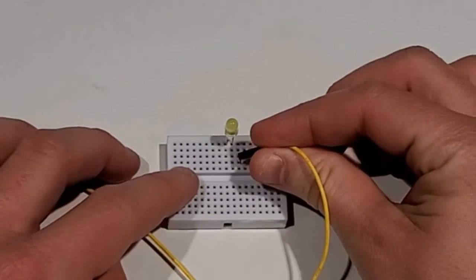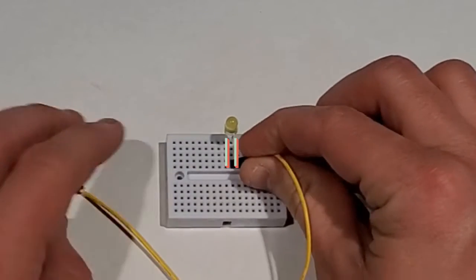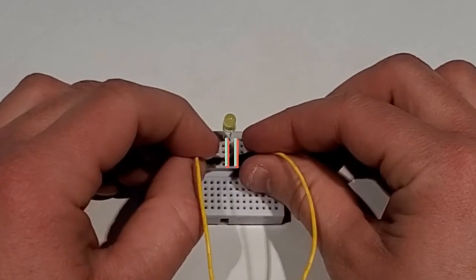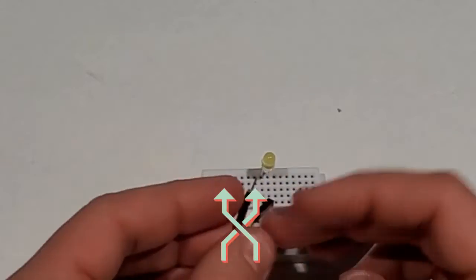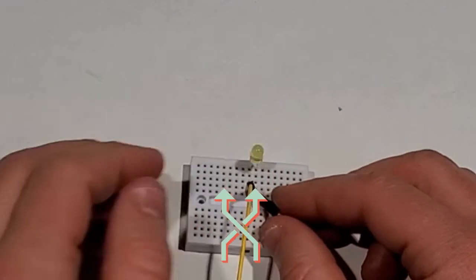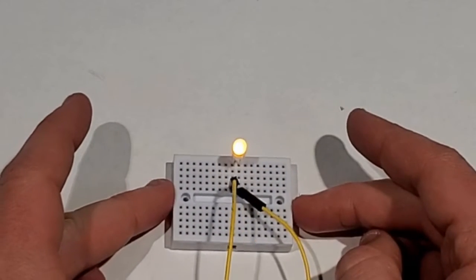You're going to take your two wires and stick them into any of the lined up holes in your breadboard. Notice it doesn't go on. Try switching your wires. And you've made light.